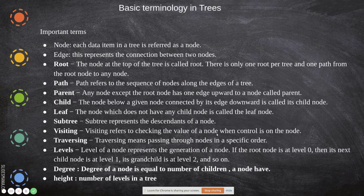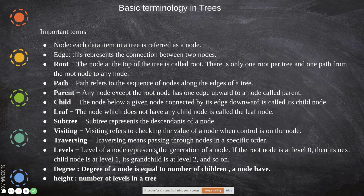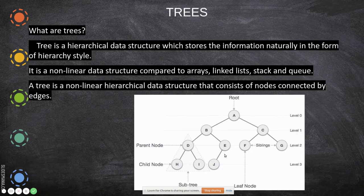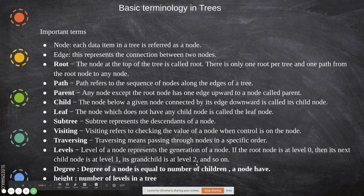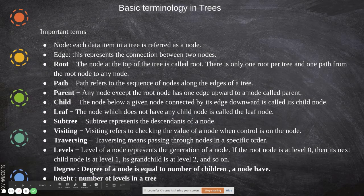Visiting refers to checking the value of a node when control is on that node — when you move to a node you read its value. Traversing means passing through nodes in a specific order. There are some conditions involved — pre-order, post-order, and in-order — that we will see later. Levels represent the generation of a node. If the root node is at level zero, then its next child node is at level one, grandchild at level two and so on.